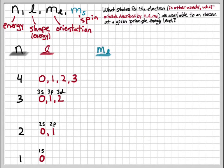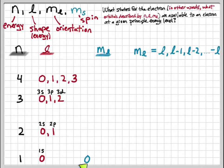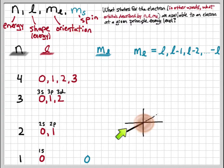Next we'll talk about how we determine the values of ml, the quantum number associated with the orientation of our orbitals in 3D space. ml takes on values dictated by the quantum number l, going from positive l down to negative l. At energy level 1, where l equals zero, there is only one possible value of ml — the 1s orbital has only one orientation. This makes sense because it's a spherical orbital; rotating it doesn't change its orientation relative to the xyz axes.